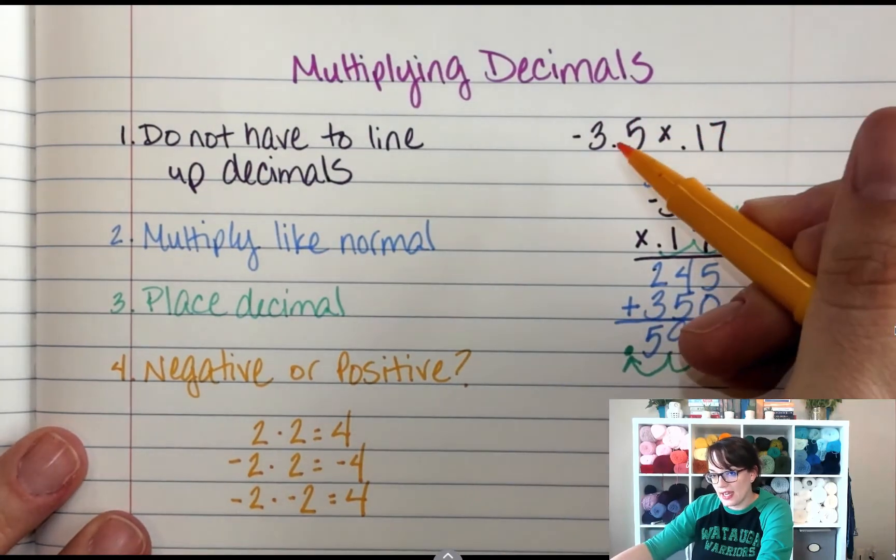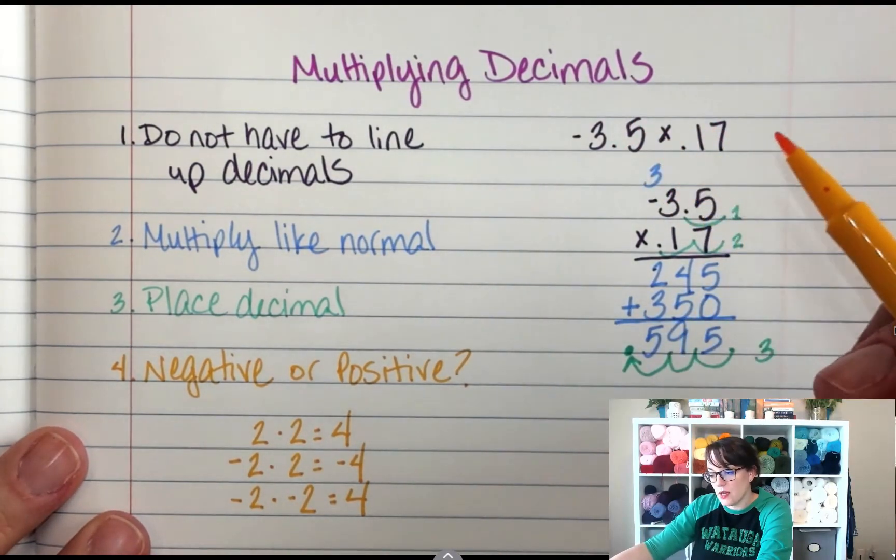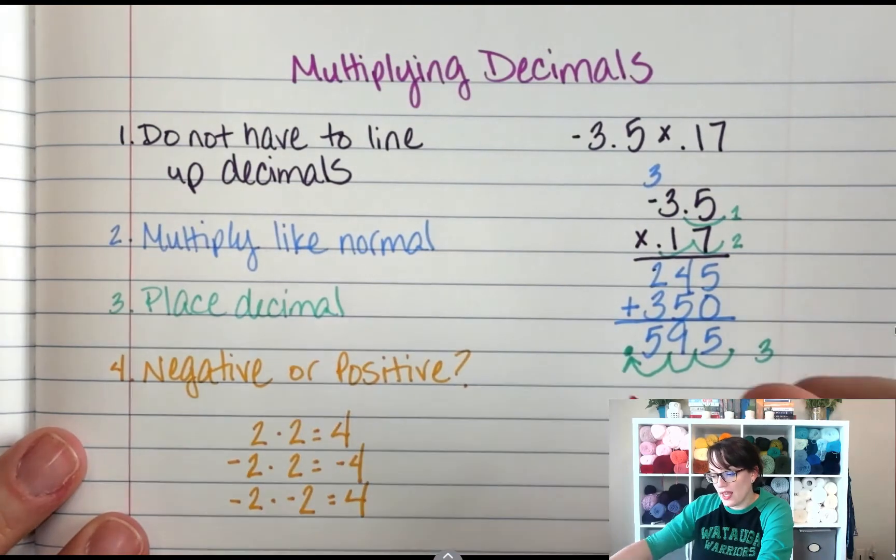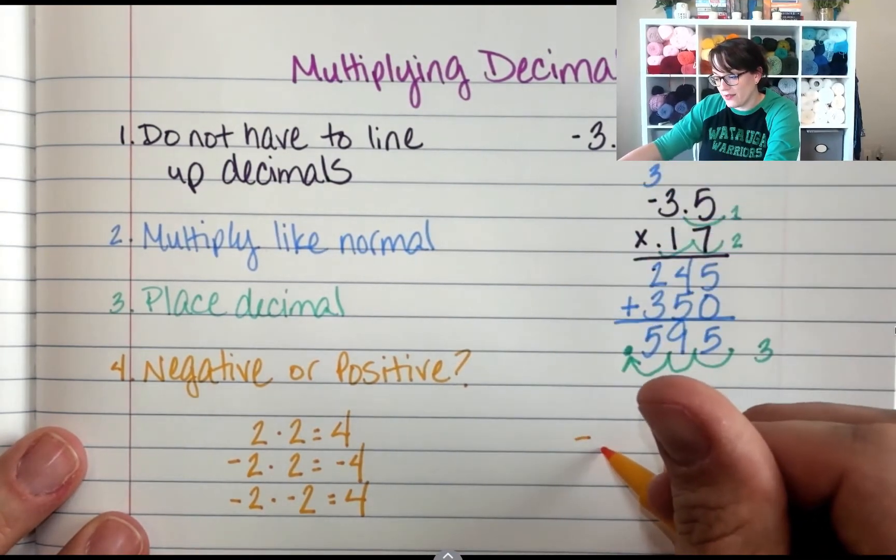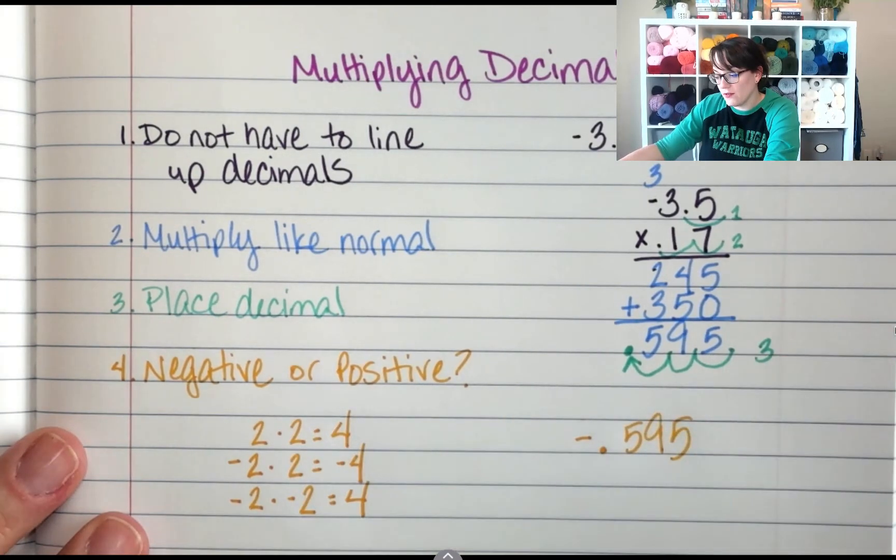So here I had a negative times a positive. So my answer is going to be negative 0.595.